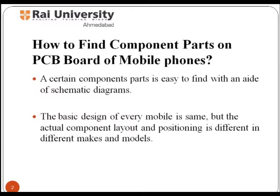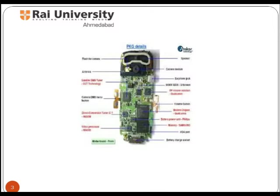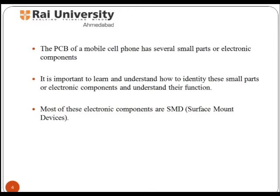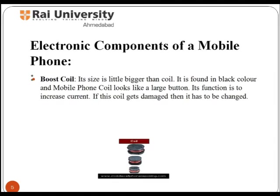A certain component part is easy to find with the assistance of a symmetric diagram of the mobile. The basic design of every mobile is the same, but the actual component layout and positioning is different in different makes and models. The PCB of a mobile cell phone has small electric components. You must learn and understand how to identify these small electronic components and understand their functions. Most of these electronic components are surface mount devices, made by surface mount technology — a method of producing electronic circuits in which components are mounted directly onto the surface of the PCB.